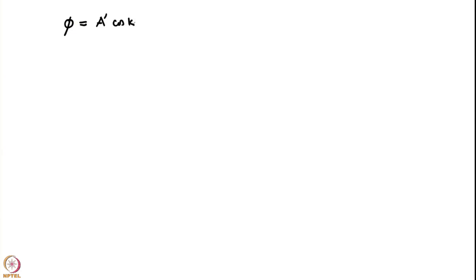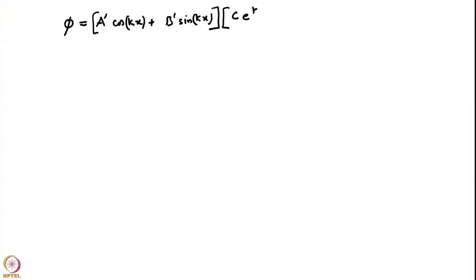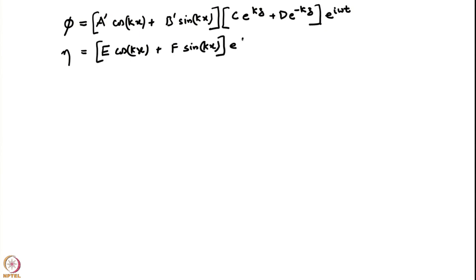By variable separation arguments, φ is a linear combination of cos(kx) and sin(kx). In the vertical direction, unlike before, we must keep both exponentials since the domain is finite: φ = (a′cos(kx) + b′sin(kx))(ce^(kz) + de^(−kz))e^(iωt). The second exponential term was not present in the deep water case. Similarly, η = (E cos(kx) + F sin(kx))e^(iωt).